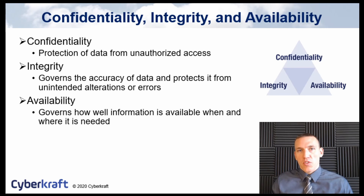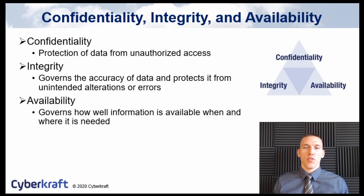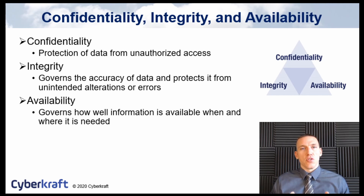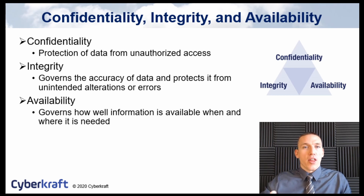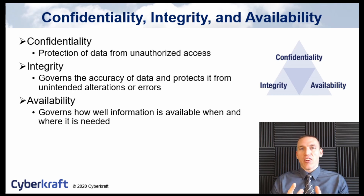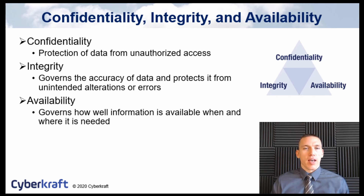For many of you this will be review: confidentiality, integrity, and availability are three terms we'll be covering multiple times throughout the course. Confidentiality is the protection of data from unauthorized access, usually involving some form of encryption to ensure data is not exposed to people who are not authorized to view it. Data integrity is the accuracy of the data — making sure files maintain their structure and the data does not change over time, either through malicious attacks or just through data decay.